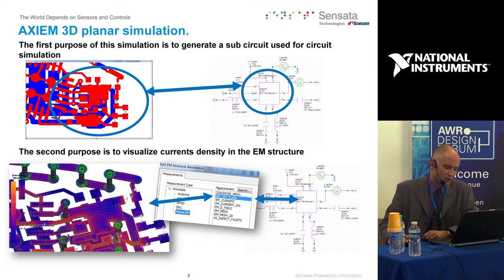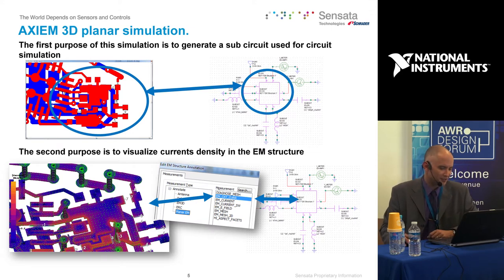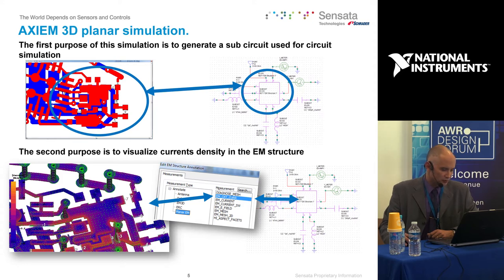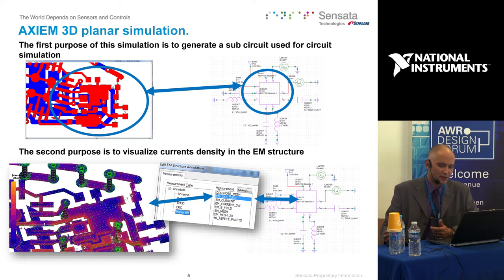The second purpose is to look at the current inside the EM structure. Here you have an example of an annotation called EM-CKT current — a very handy feature in AWR that links together the EM structure and the circuit. The current shown on the screen takes into account, for example, that at port NUM6 a capacitor is connected, so the current is modified due to that connected impedance. It's very handy to assess the current everywhere in the PCB.